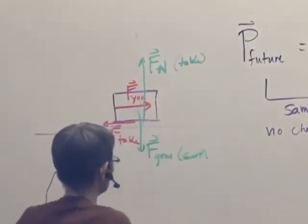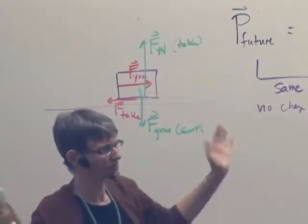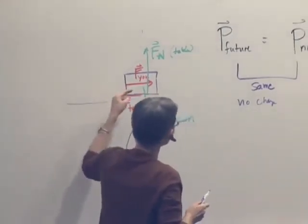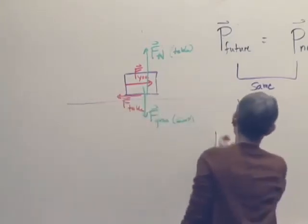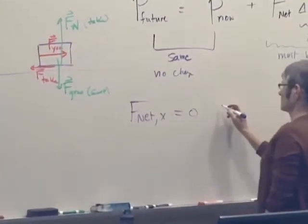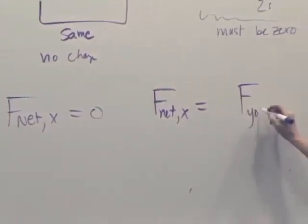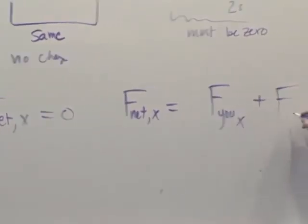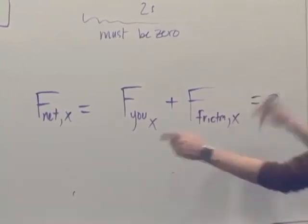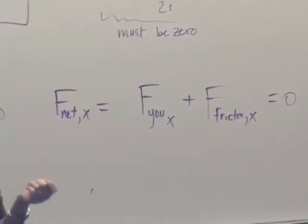We know those two things have to be equal in magnitude and opposite in direction because the block isn't suddenly rising up into the air or burrowing down through the table. So its momentum in the y direction isn't changing. Momentum in the x direction isn't changing. It must mean that F net x is zero, which must mean that F net x is F by U in the x direction plus F friction in the x direction. And that has to be zero, so those two forces have to be equal in magnitude and opposite in direction. That's what we get from reasoning with this principle.